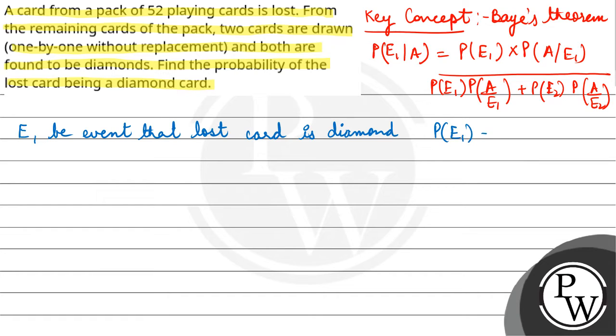E2 is the event that lost card is not a diamond. The probability of E2 is 1 minus P(E1), that is 3/4. Now we have to pick up the cards one by one.